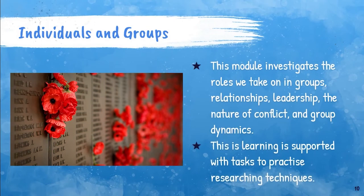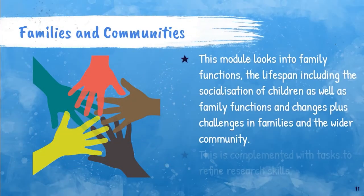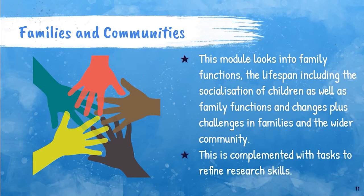Individuals and Groups is looked at in terms of leadership and the way that groups work. That learning is supported by researching the different avenues and ventures that people take. Family and Community Studies is the last module in the preliminary course, and it looks at setting you up for success for the IRP. In this area you will do a literature review on child socialization, look at family functions, and make decisions about where to head in your HSC studies.